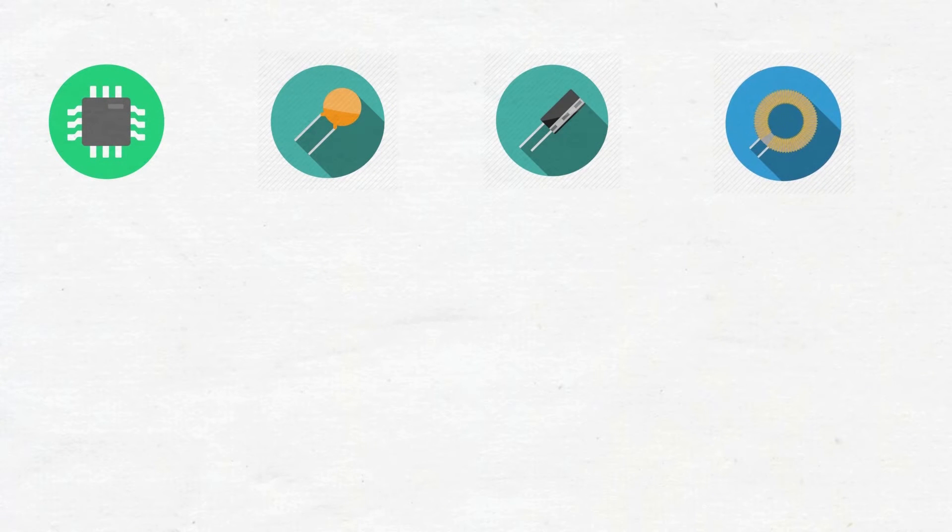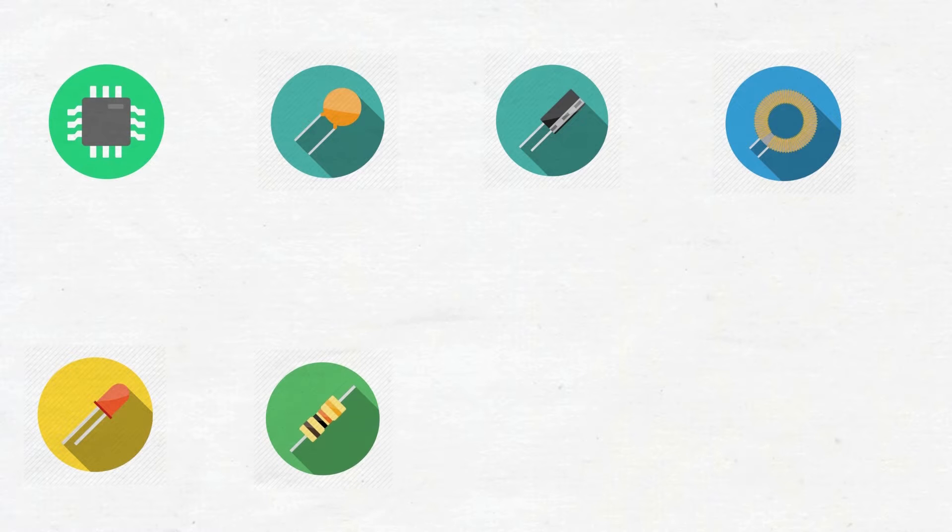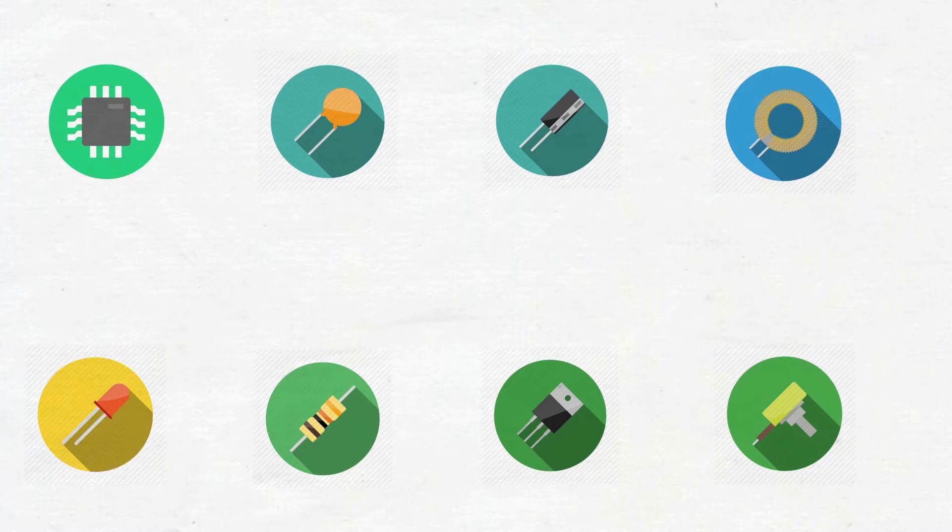Electronic components are classified as passive components and active components. Let's learn about passive and active components.